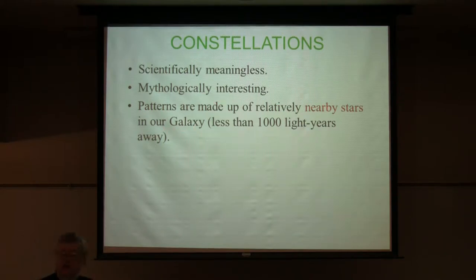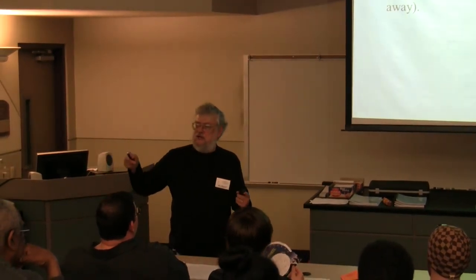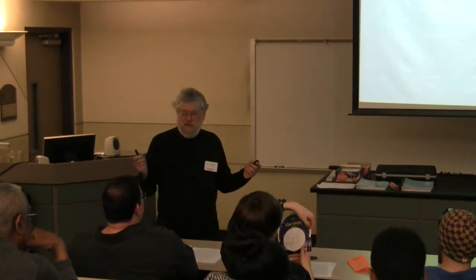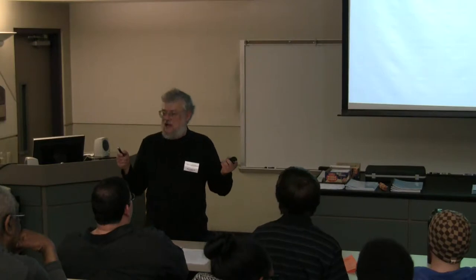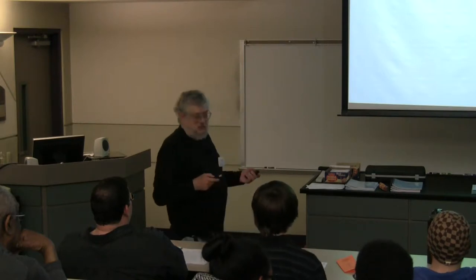Our Milky Way galaxy is 100,000 light-years in diameter — that is, it takes a beam of light 100,000 years, going at 186,000 miles per second, to go from one side of our galaxy to the other. When we go out into the night sky, all the stars we see are very close. We don't see over to the far side of our galaxy by any means. They're all within a few hundred to maybe a thousand light-years, compared to a hundred thousand — so we're looking at maybe one percent of our galaxy on a good clear night.